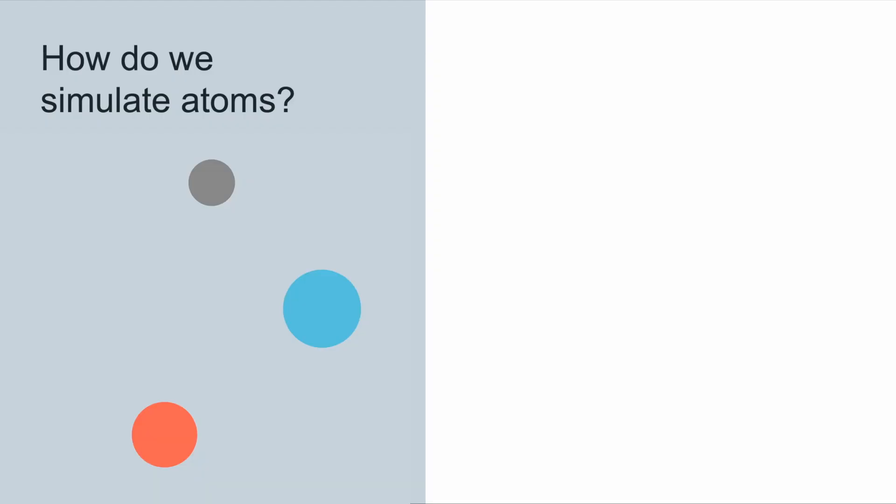So how do we model the interaction of atoms? How do we figure out their arrangement? The way this is done is we have an initial arrangement of atoms, and then we compute the forces on the atoms. We then update the atom positions, and then repeat this process,